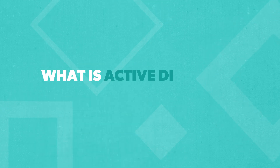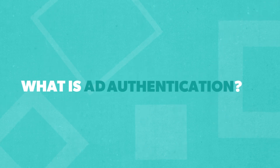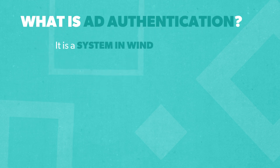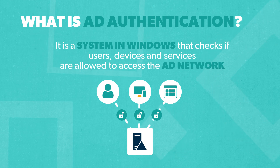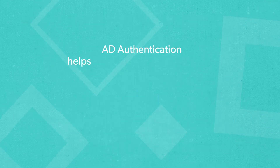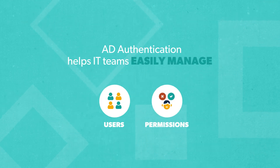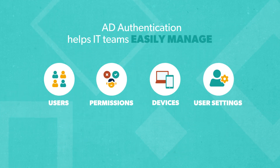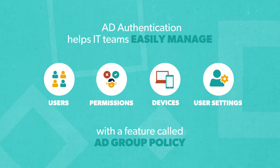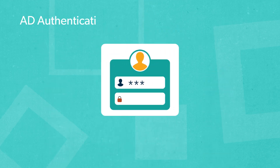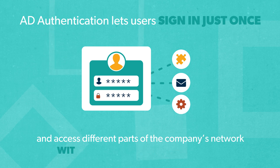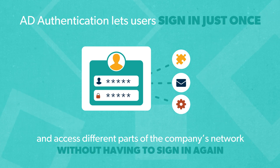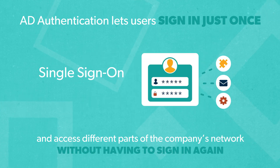First, let's make sure we're clear on what Active Directory, also called AD, Authentication is. AD Authentication is a system in Windows that checks if users, devices, and services are allowed to access the Active Directory network. It helps IT teams easily manage users and permissions, and it also lets them control devices and user settings with a feature called AD Group Policy. AD Authentication lets users sign in just once, and then access different parts of the company's network without having to sign in again. This is called Single Sign-On, or SSO.